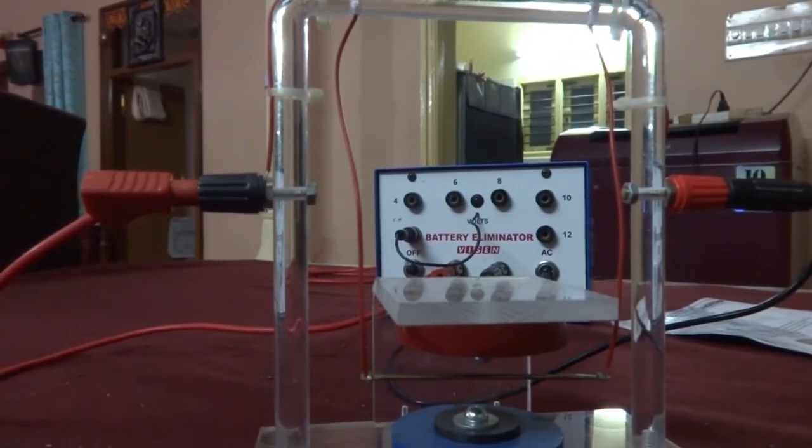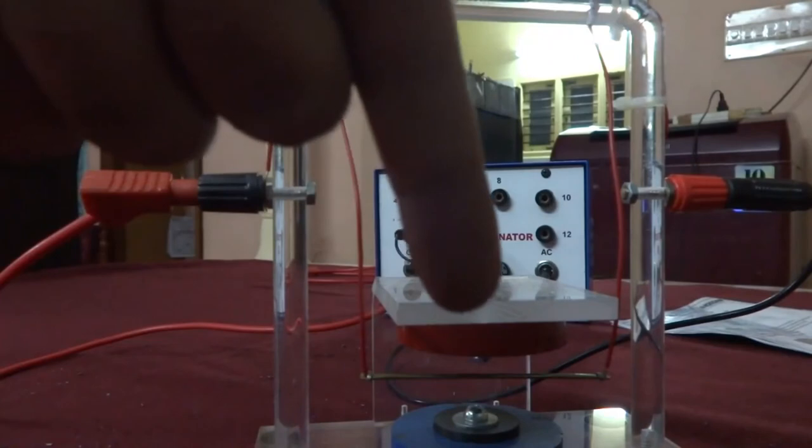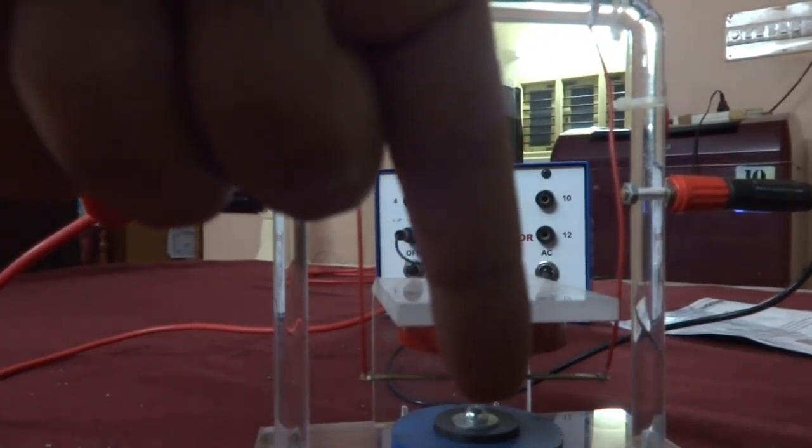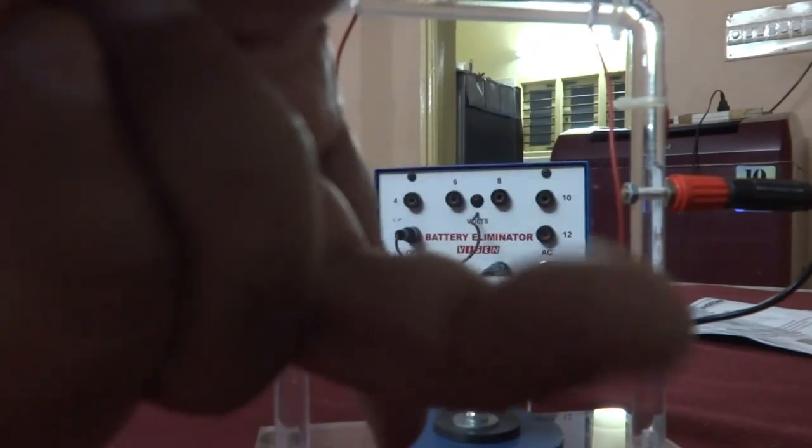So now to find the direction of the motion, I have to use Fleming left hand rule. So this is my left hand rule. I have to keep the magnetic field in the direction of the magnetic field, this forefinger. Now I have to open my middle finger in such a way where the current is there.